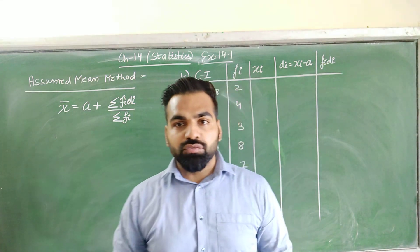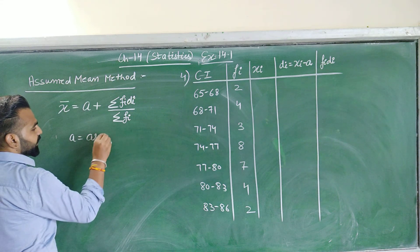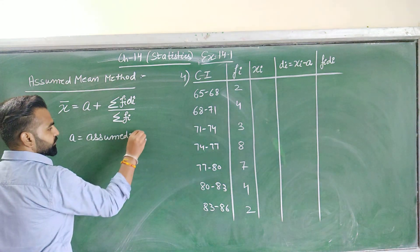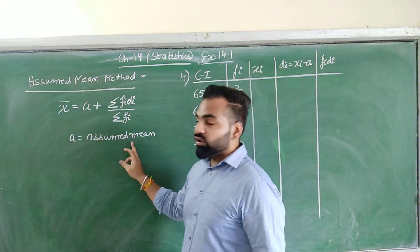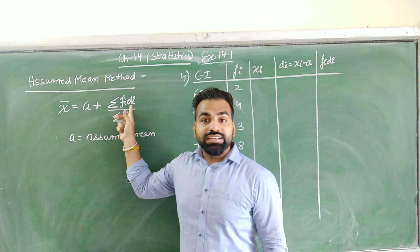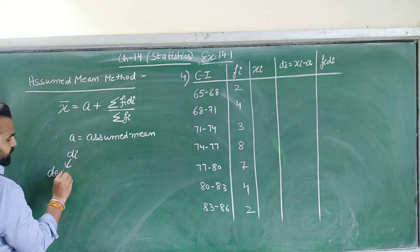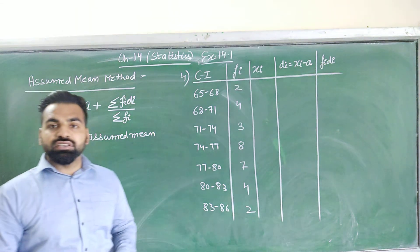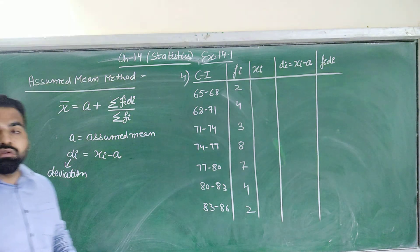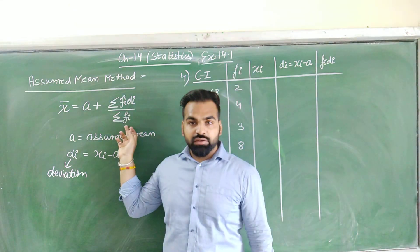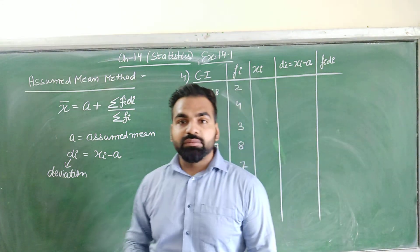Σfᵢ is the sum of all frequencies. There is a new term here, that is 'a', which is called the assumed mean. We will discuss how to find the assumed mean in the question. There is another new term, dᵢ, which is called the deviation. dᵢ is calculated as xᵢ minus a.